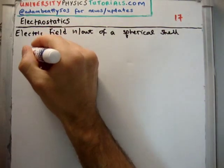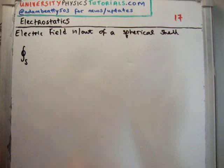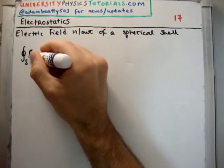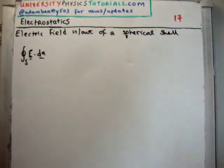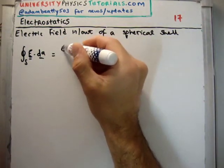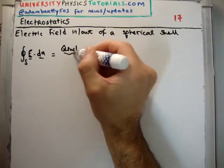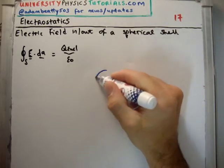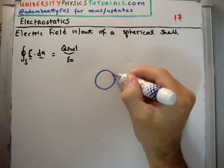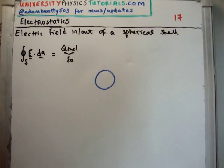we have the closed surface integral of the dot product of your electric field with the infinitesimal area element of your Gaussian surface and that equals q enclosed over epsilon zero. So in order to calculate the electric field due to a spherical shell of continuous charge, what we need to do is come up with a Gauss' surface. So we said for spherical symmetry your Gauss' surface is a sphere.